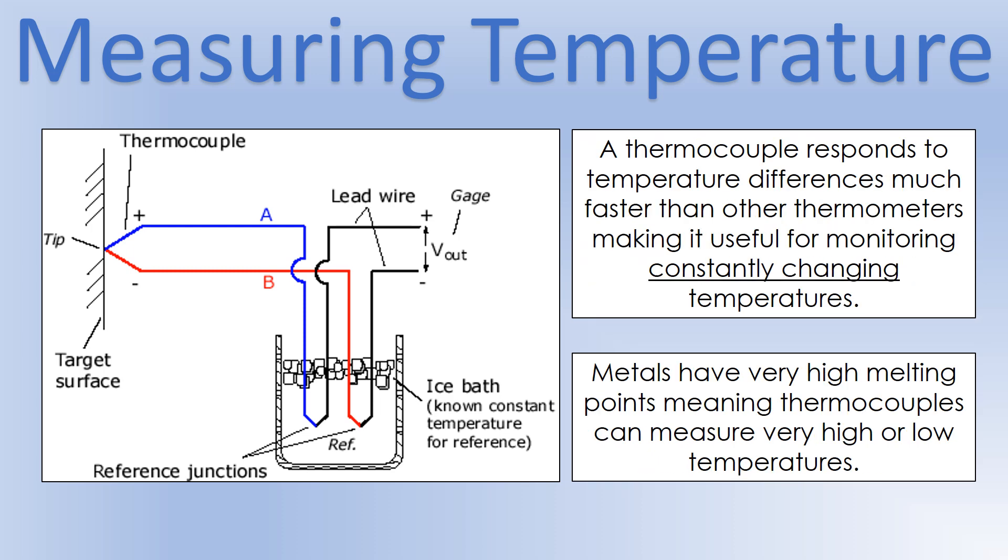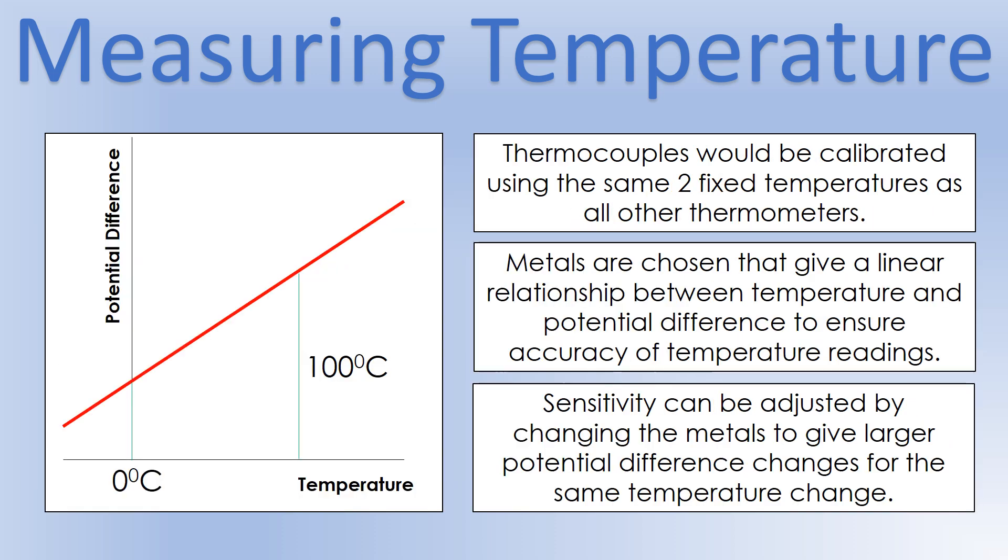So the benefit of a thermocouple is the speed at which it responds. So electron diffusion happens very quickly, even though there are different rates. So it's very effective for measuring something where the temperature is changing continuously. You can take measurements very quickly. And the other thing is, because this is made out of metal, metals have very high melting points. So it gives you a very large range of temperatures that you can take measurements over, unlike your liquid based ones that we've seen earlier.